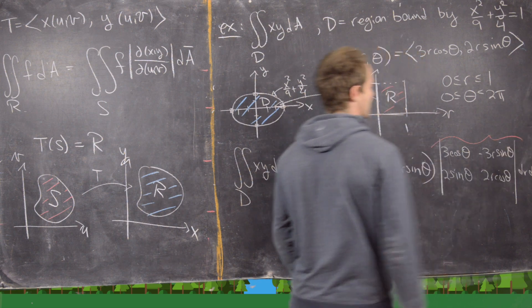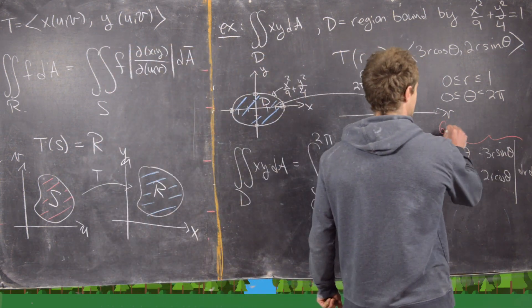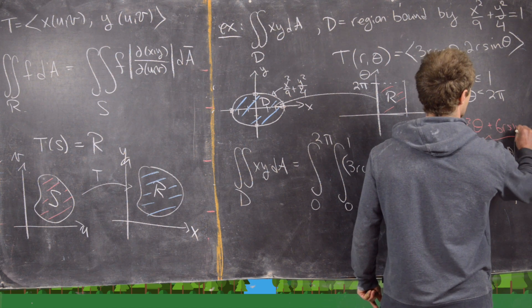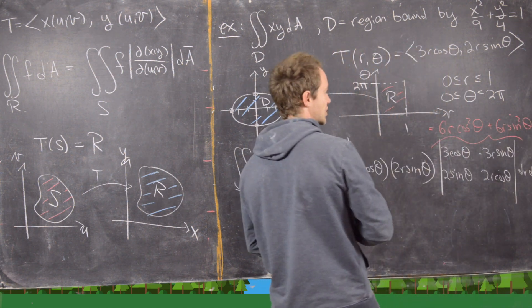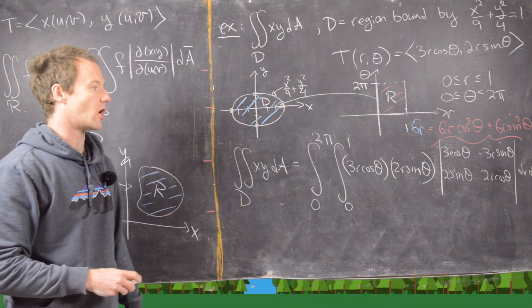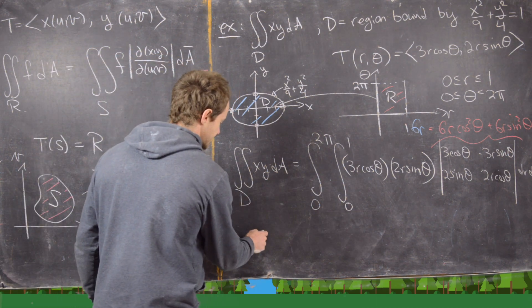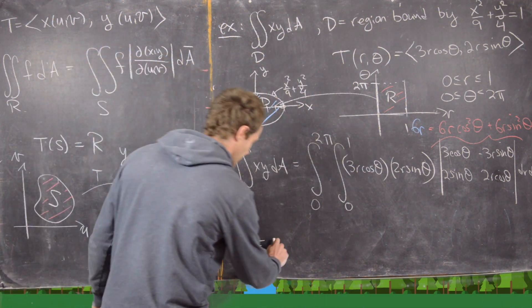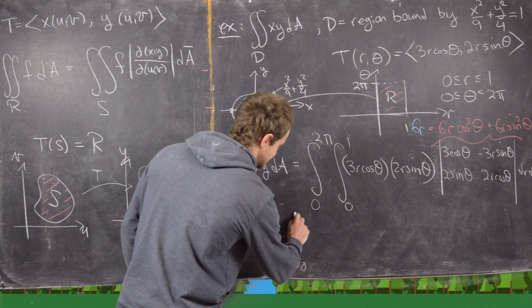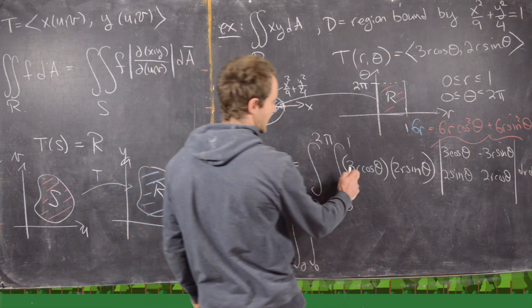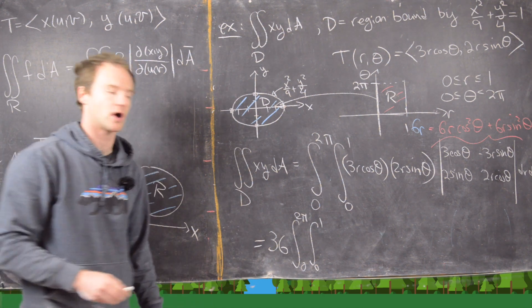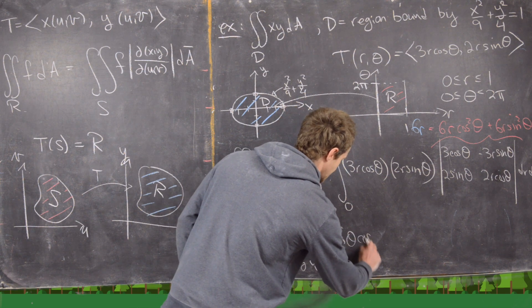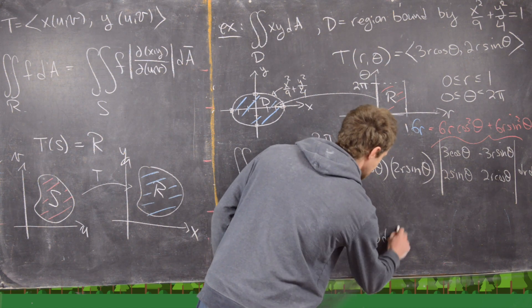Let's go ahead and calculate this Jacobian. We get 6r cosine squared theta plus 6r sine squared theta, and by trigonometric identities that adds together to give 6r. So I can bring out a 6 from the Jacobian, and a 3 times 2 which is another 6 from x times y, giving 36. Then the integral from 0 to 2π and 0 to 1, and now I have r from x times r from y times r from the Jacobian, so I have r cubed, times cosine theta times sine theta, dr dθ.